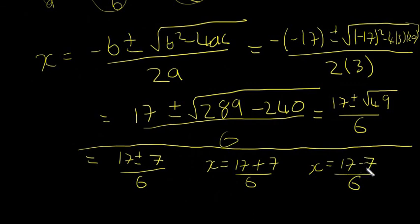Our two answers are going to be - so 17 plus 7 is going to be 24 divided by 6, which is going to give us 4. So x equals 4.